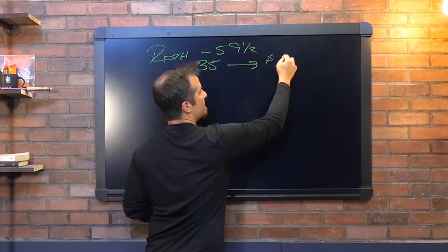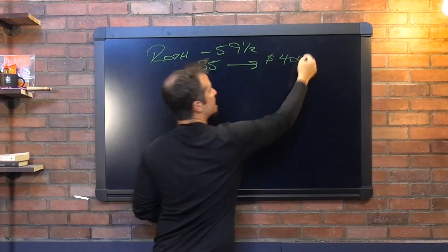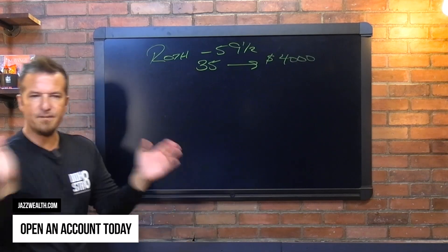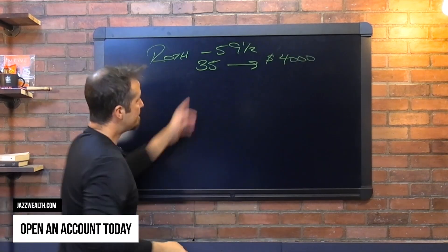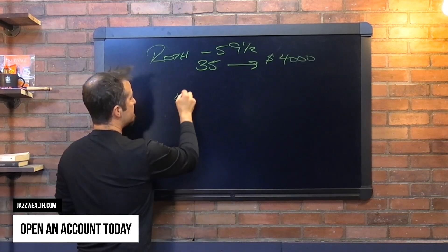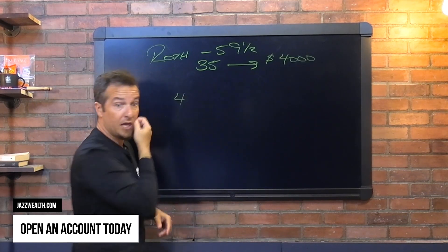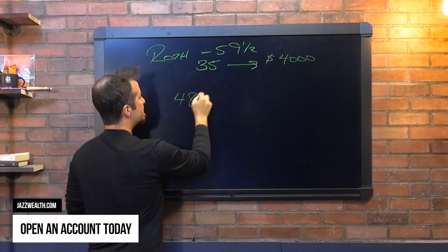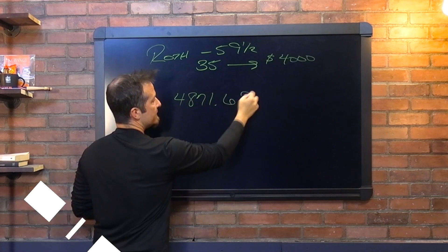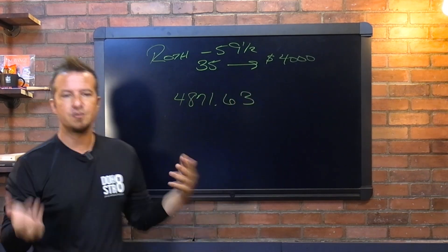All right, so let's just say you are 35, right? You join Jazz Wealth, thank you, and you start off and you say, well, I'm going to put in $4,000. That's going to get my retirement life kickstarted. Super happy about this, it's going to be great. Let's say some time passes and this $4,000, maybe not this year, but let's say the $4,000 turns into $4,871.63. I'm just trying to make it obvious that there was some growth in there to some degree, $871.63.